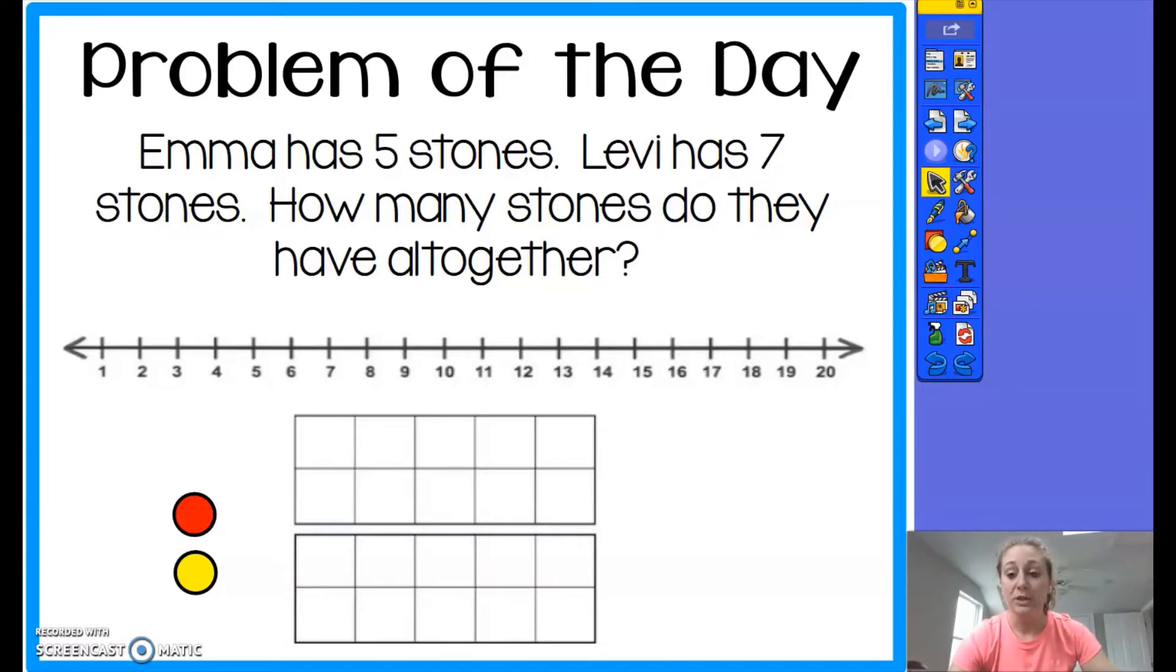I'm going to show a couple different strategies that you could have used to solve the problem. I'm going to start with the seven stones that Levi had, and I'm going to be combining it with Emma's five. We know that we want to know how many there are altogether, which means that our numbers should be getting larger.